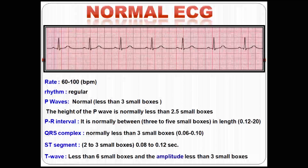For a normal ECG strip: the rate is 60 to 100 beats per minute, regular rhythm with R's roughly the same distance apart, a P wave less than three small boxes, PR interval between three to five small boxes, QRS complex less than three small boxes, ST segment two to three small boxes, and T wave less than six small boxes with amplitude less than three small boxes.